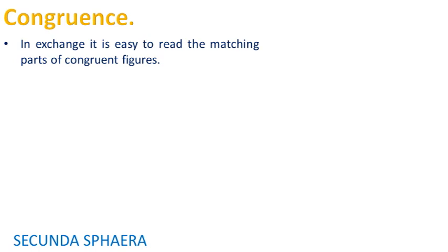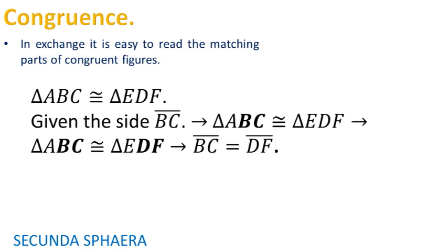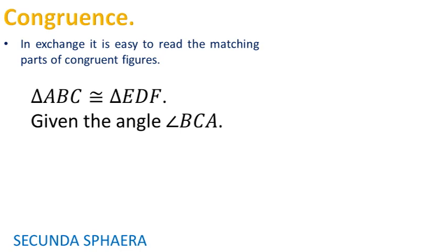If a side or angle is chosen in one of the figures, the notation gives the name of the matching part in the second figure. If the triangle ABC is congruent to the triangle EDF, given the side BC, then the sides BC and DF are equal. Also, given the angle BCA, the angles BCA and DFE are equal.